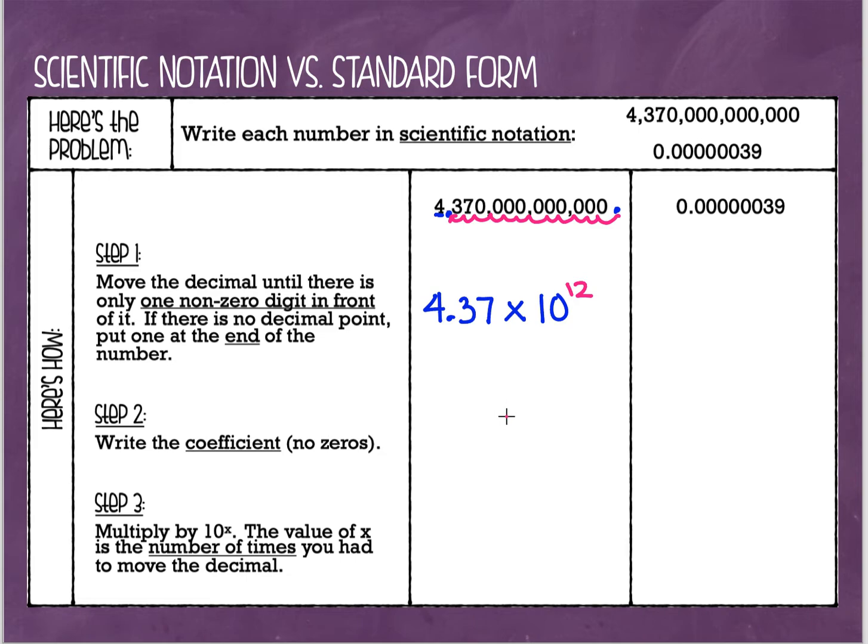So the way that I would write this large number in scientific notation is I would write it as 4.37 times 10 to the 12th power. Okay, let's try the next one.